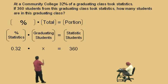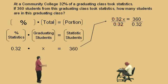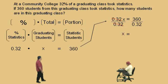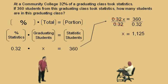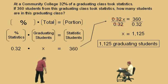So here's our equation: 0.32x equals 360. How do we solve for x? Divide both sides by 0.32 — those cancel. We get x equals 1,125. That's the total graduating class. Very nice.